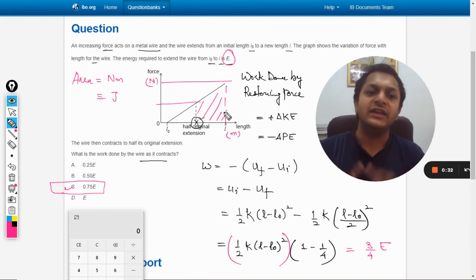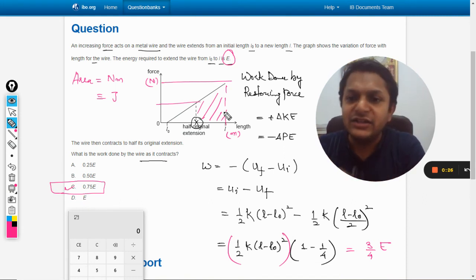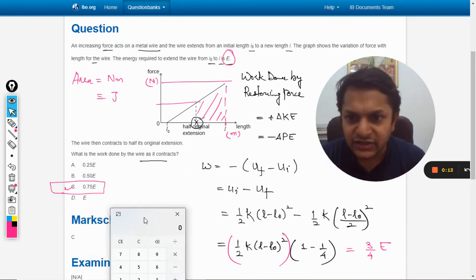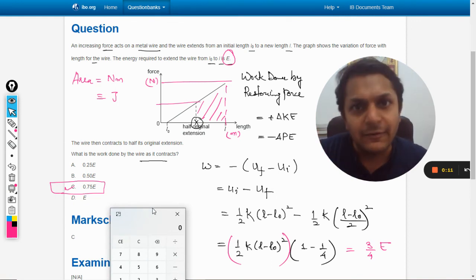Otherwise, by finding the area directly, you could have reached the same conclusion that the energy lost is 0.75E. That could be far more easier than this, but that is not possible in this case. That is why we have done this. Let us now check the answer once. Yes, the answer is C. With this, all the best, bye.